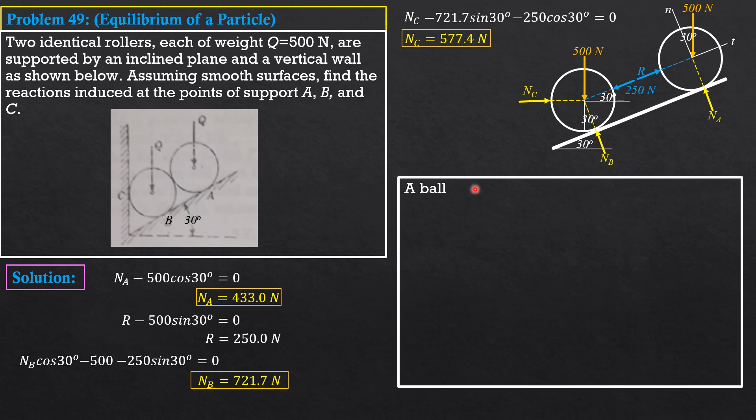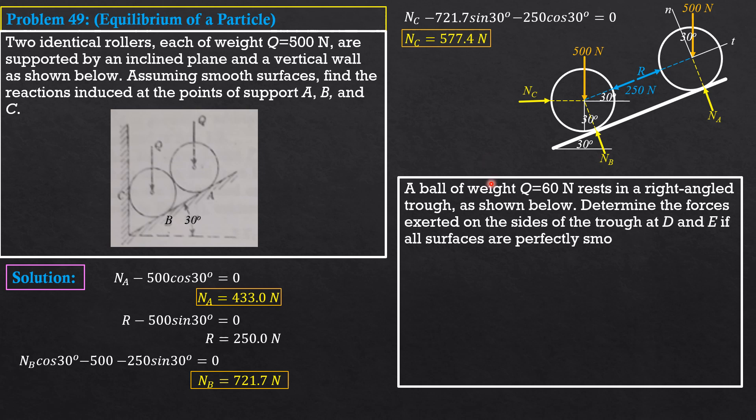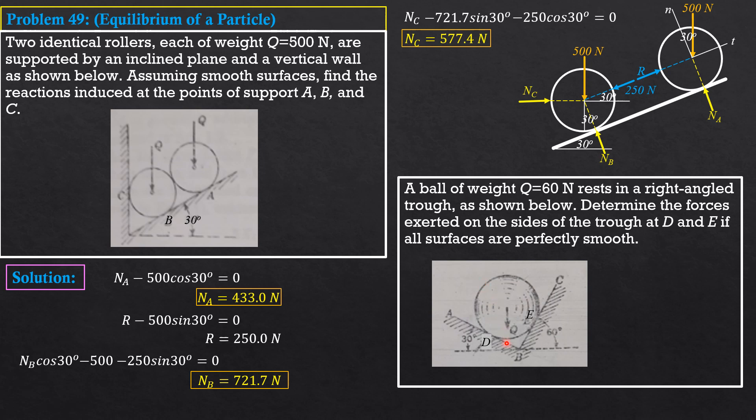So, that's it for this problem. Then, for your part, I want you to solve this. A ball of weight Q, 60 newtons, rests in a right-angled trough, as shown below. Determine the forces exerted on the sides of the trough at D and E if all surfaces are perfectly smooth. So, that's it. And there is a problem I already solved with this. And I hope you can solve and show that ND is equal to 51.96 newtons and NE is equal to 30 newtons. So, that's it for your part.